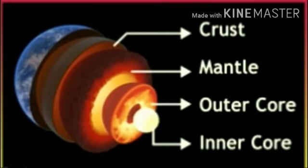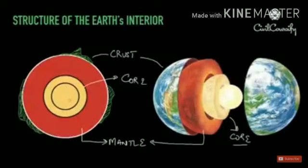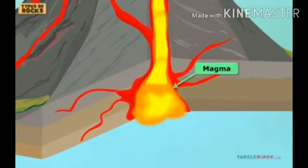Our earth is made up of three layers: the outermost crust, middle layer mantle and the innermost core. Core is the hottest part of the earth as it is made up of melted rocks. This molten mass of melted rocks and metals is called magma.